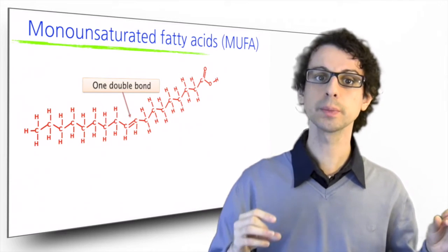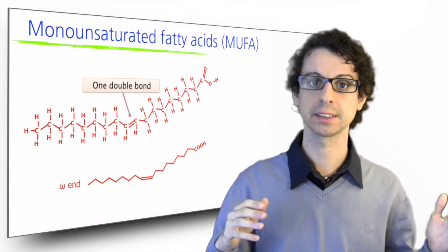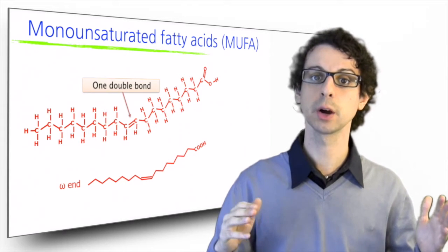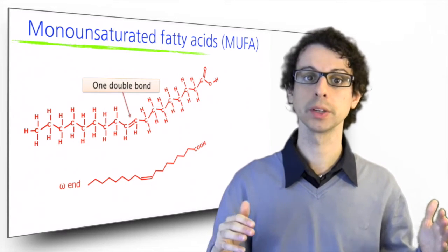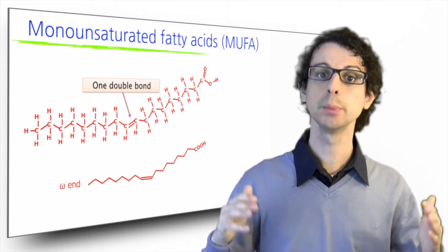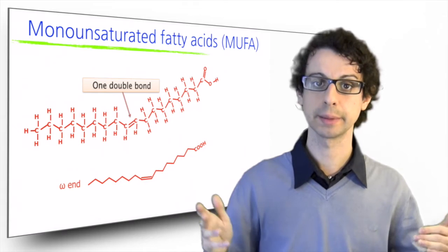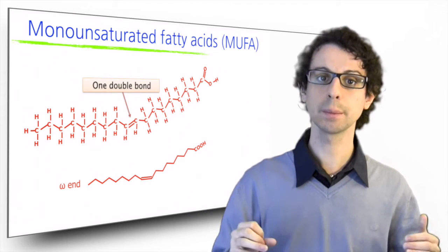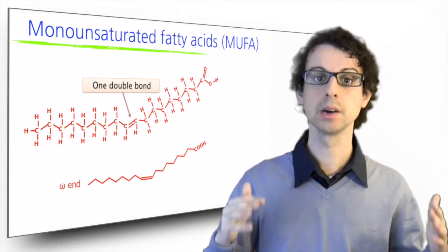If we count from the end, which is called the omega end of the fatty acid, in position 9 from the omega end we have the double bond. So this is why we say that this monounsaturated fatty acid belongs to the omega-9 family. The first and only double bond is 9 carbons away from the omega end.